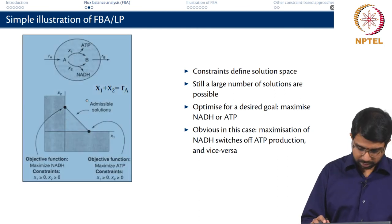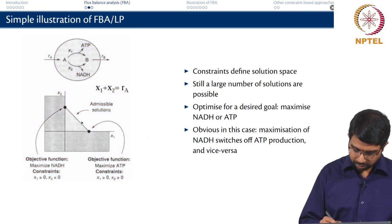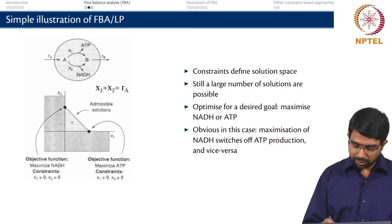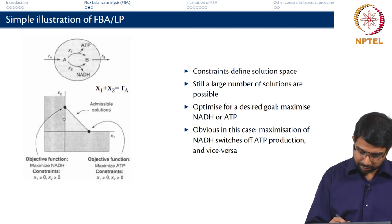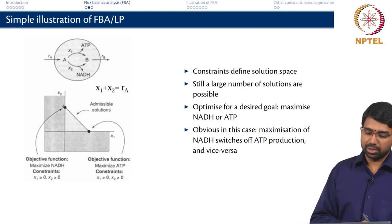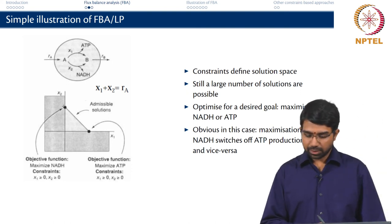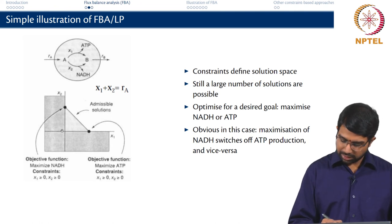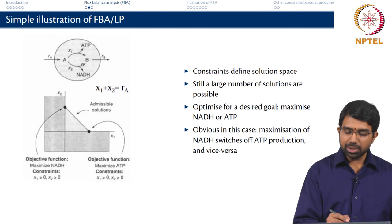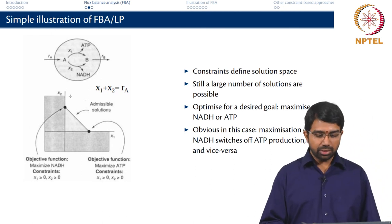Because of that all your solutions lie on this line. Now you can say maximize X1 which means you will get to this point X1, RA, 0 or RA as the other point. So here you basically have switching of one production. In this case the maximization of NADH switches off ATP production, the maximization of ATP switches off NADH production, but you can have whatever appropriate objective function you want.